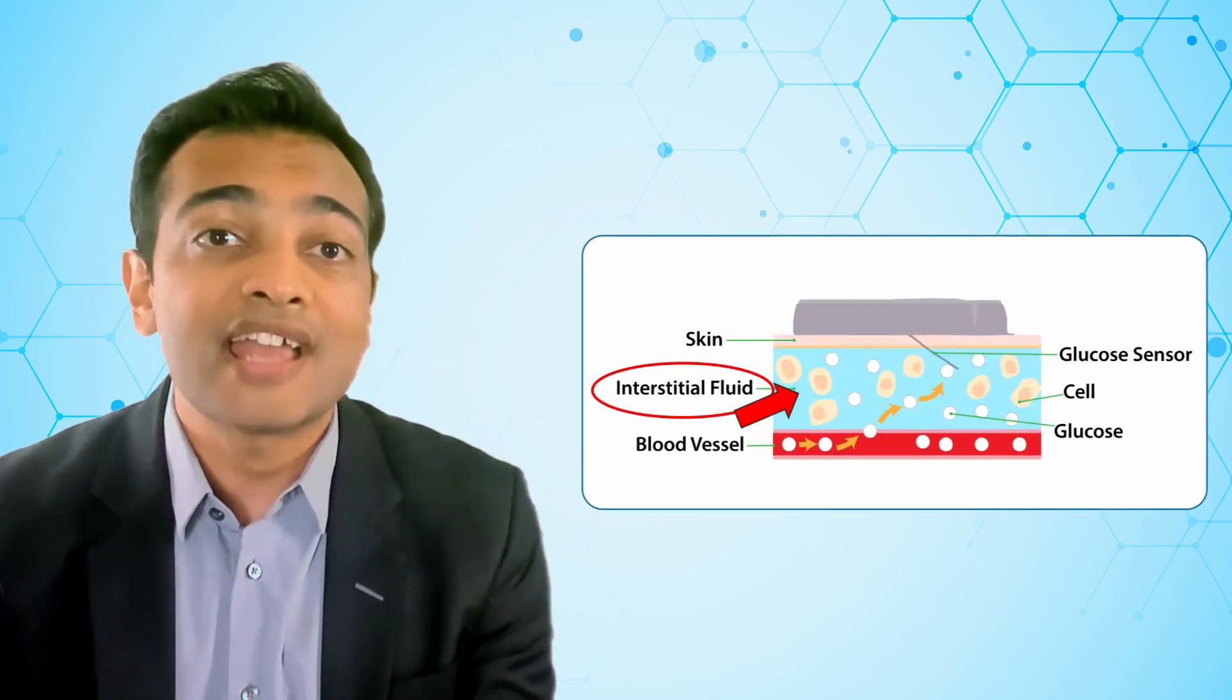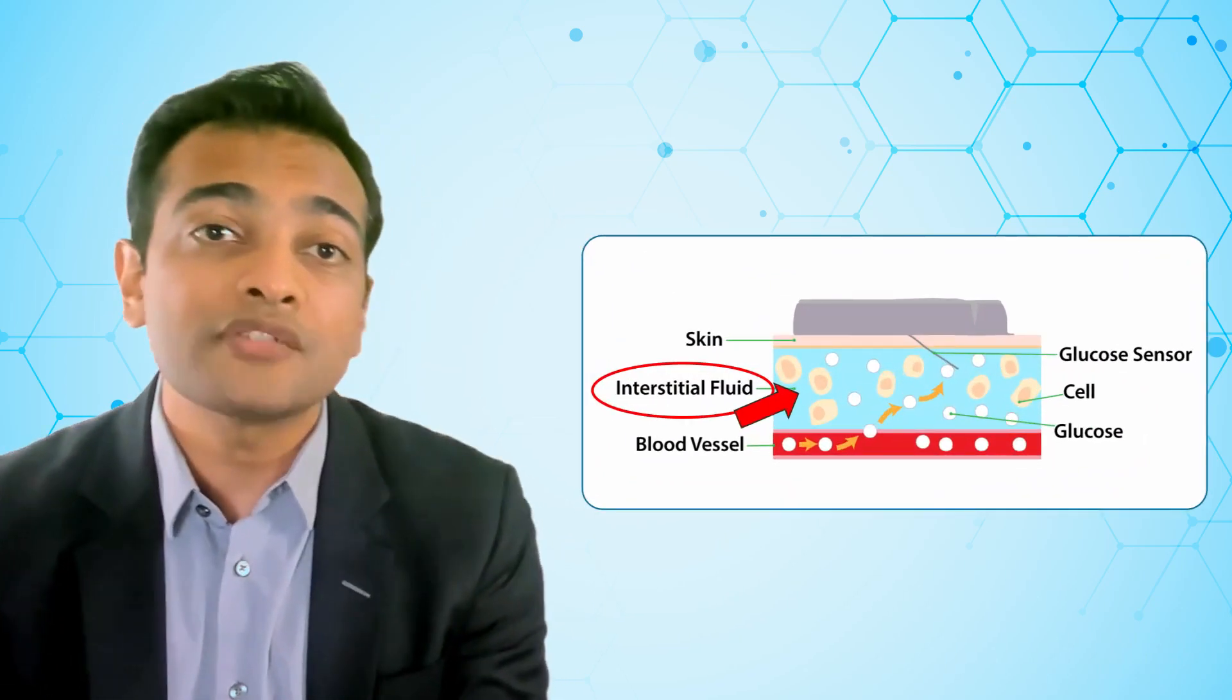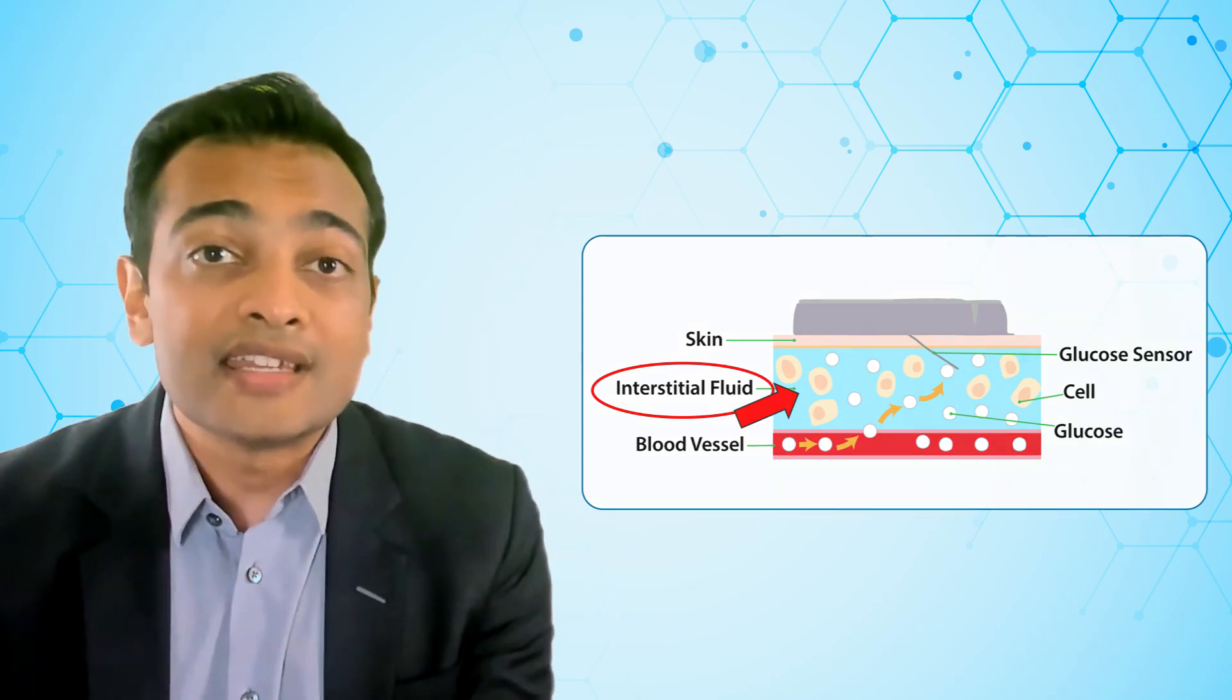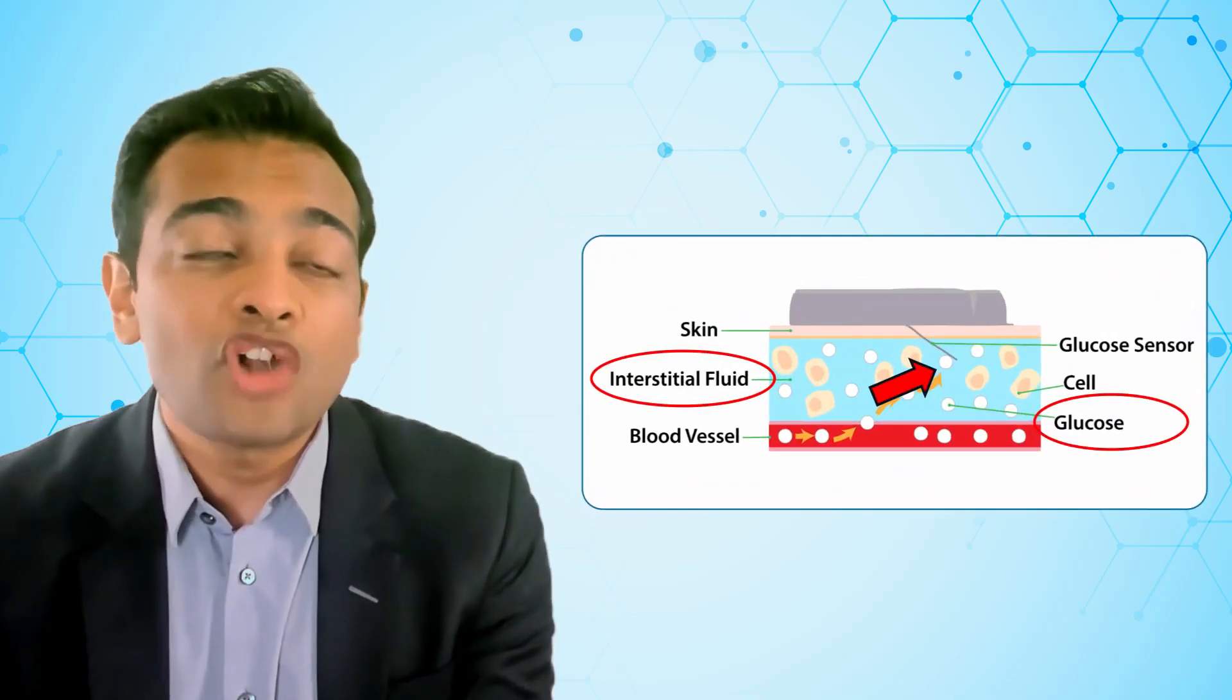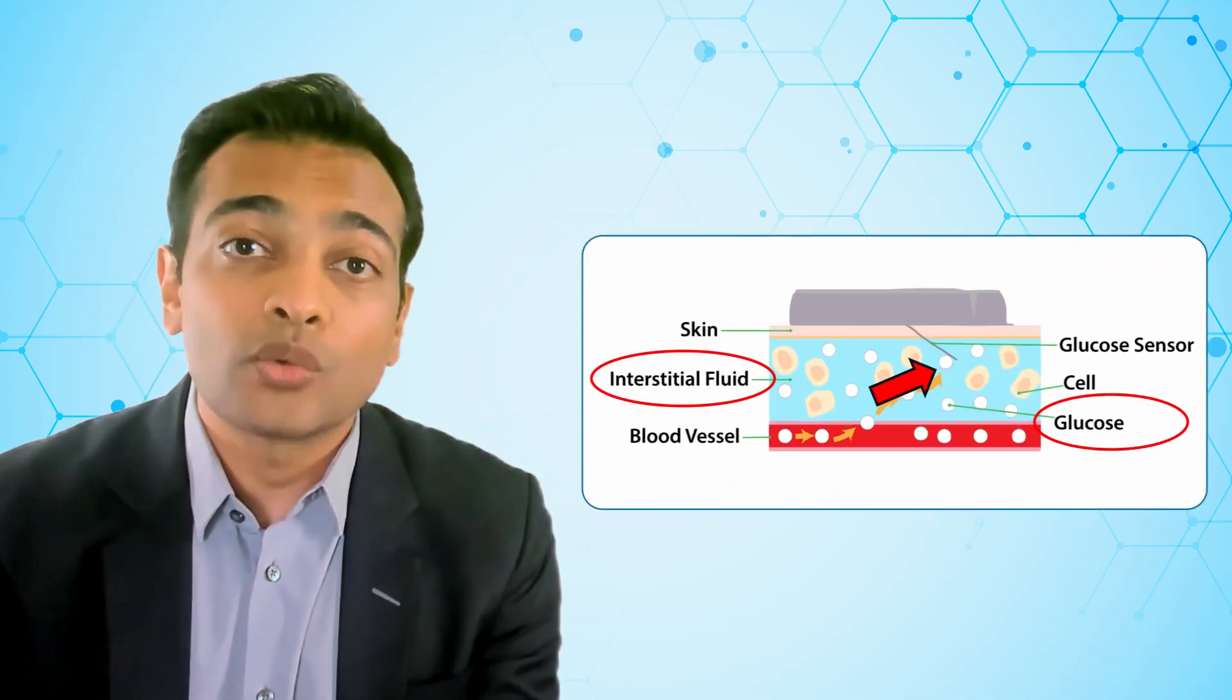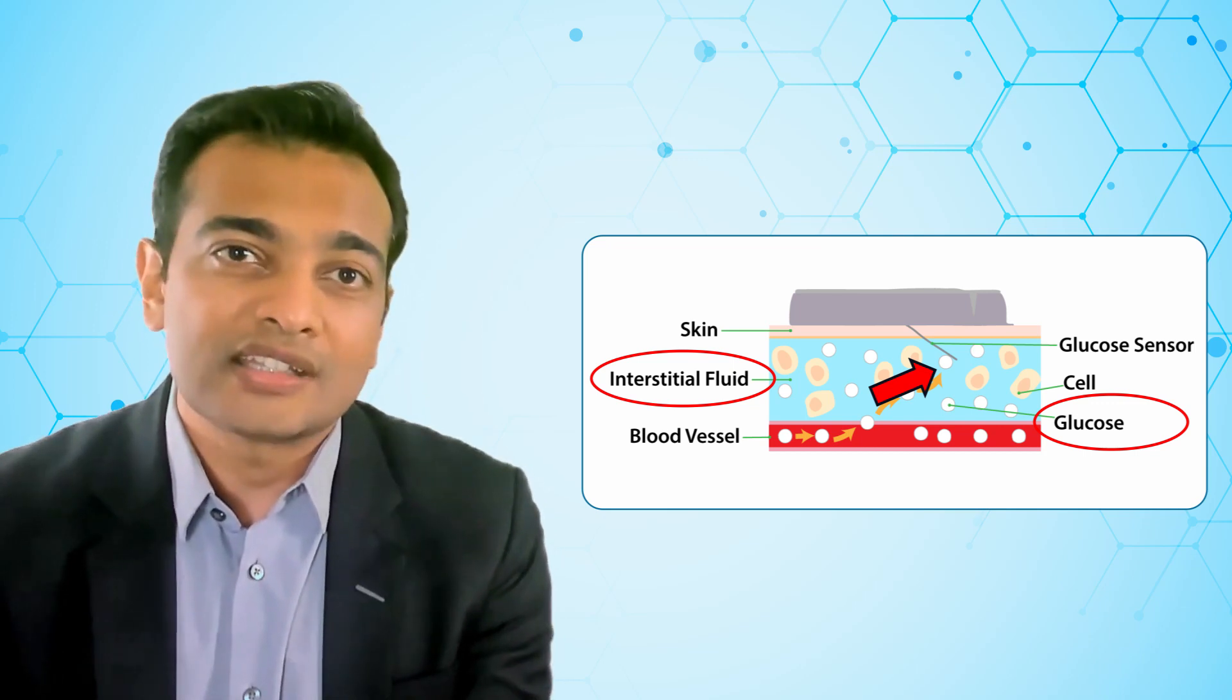There are absolutely no metallic needles that stay under the skin. This tiny filament comes in contact with interstitial fluid, which is a fluid that bathes the cells in the tissue directly underneath the skin. This interstitial fluid gets glucose from the blood on an ongoing basis and this glucose comes in contact with the filament, triggering off a signal within the filament.